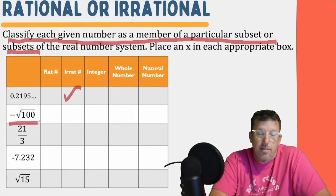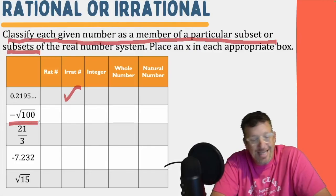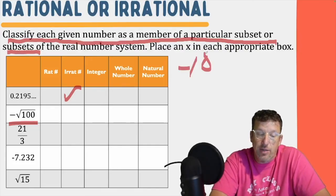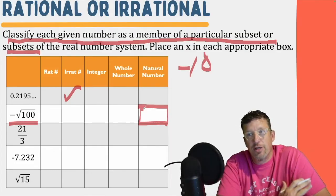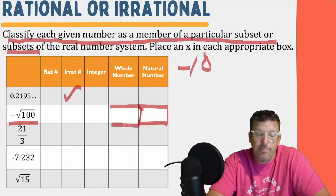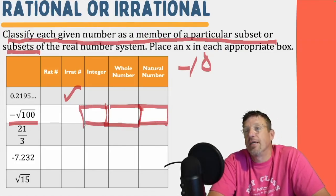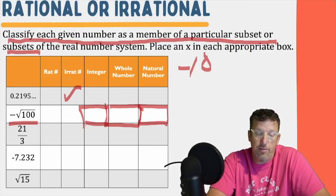Now we have the square root of 100 — or actually the opposite of the square root of 100. What's the square root of 100? That's 10. But it's also the opposite of that, so the answer we're working with is negative 10. Is negative 10 a natural number? No, because it's negative — natural numbers are only our positive counting numbers. Is it a whole number? No — a whole number is all of our natural numbers plus zero. Is it an integer? Yes, because integers include natural numbers and zero and their opposites — so our negative whole numbers. Is it a rational number? Absolutely. So you should have filled in those two boxes.